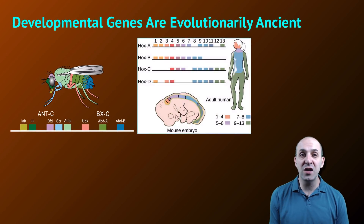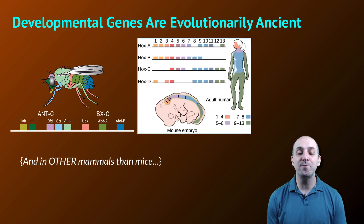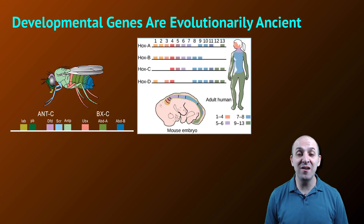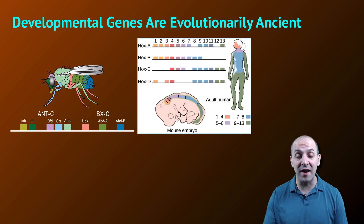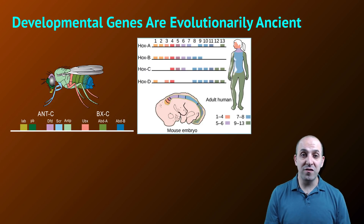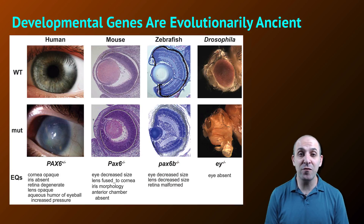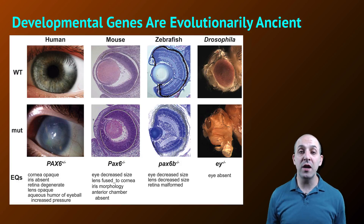We can compare those Hox genes to the Hox genes that we find in vertebrates like mice and in mammals, and we find that these genes are evolutionarily very ancient. What we mean by that is that these genes arose very early in the history of multicellular organisms like animals, and are then highly conserved throughout all of the lineages that evolve from those evolutionarily ancient organisms. The evidence for this comes from a variety of experiments looking at the relationships among these different genes.